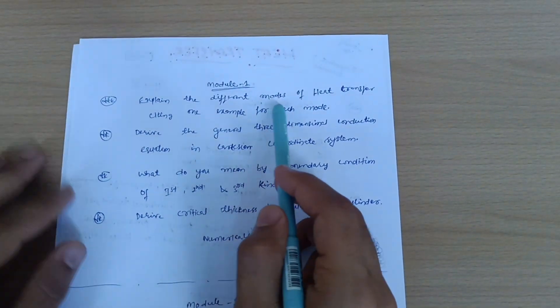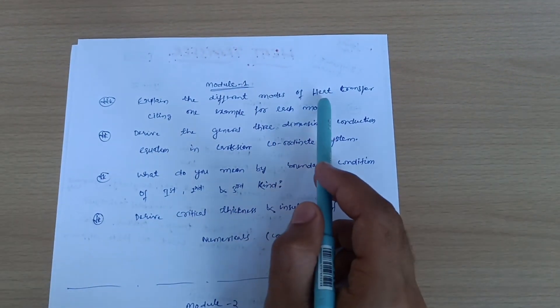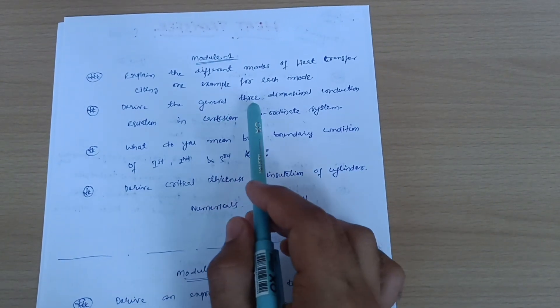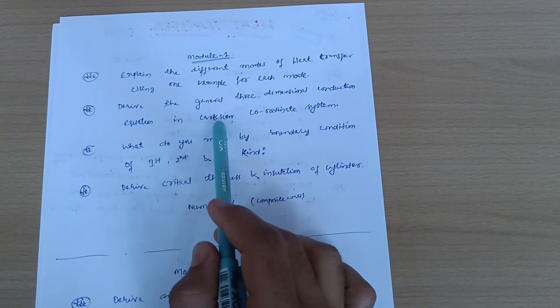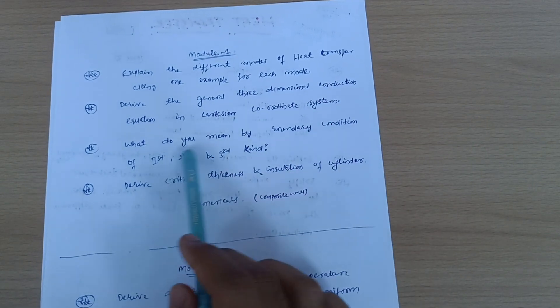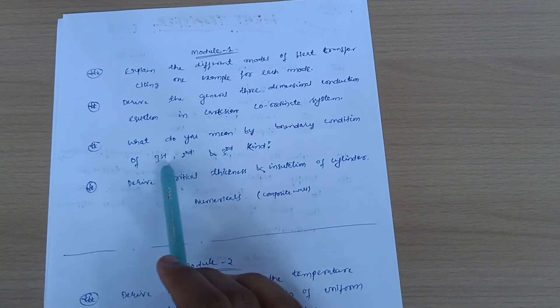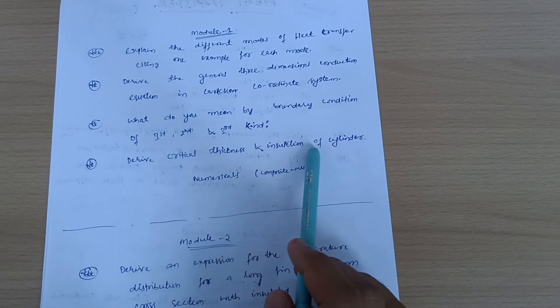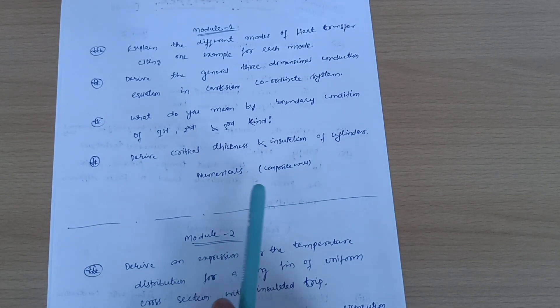Next is Module 1. Explain the different modes of heat transfer, citing one example for each mode. Derive the general three-dimensional conduction equation in Cartesian coordinate system. What do you mean by boundary condition of first, second, and third kind? Derive critical thickness and insulation of cylinder.